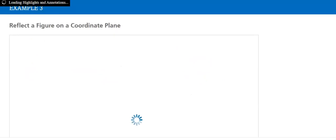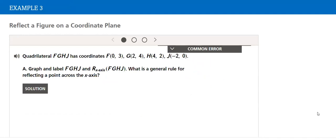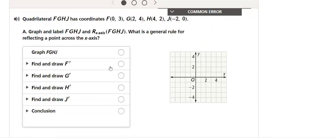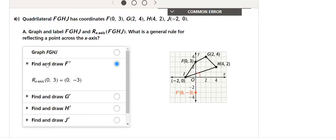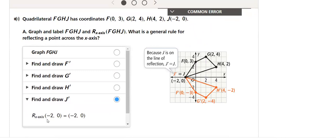This is a very interesting lesson. Reflect a figure on a coordinate plane. We have the ordered pairs given and we need to reflect the graph. We have many steps. Find and draw F prime across the reflection, then G. We will do all the steps in detail.